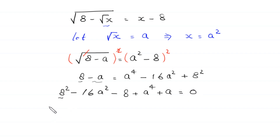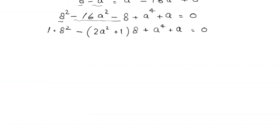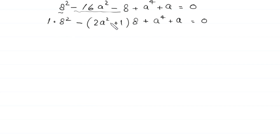Rearranging and moving 8 minus a to the right hand side gives: a to the power 4 minus 16a squared minus a plus 64 minus 8 equals 0. We recognize this as a quadratic equation in 8, where the coefficient a is 1, b is negative (2a squared plus 1), and c is a to the power 4 plus a.